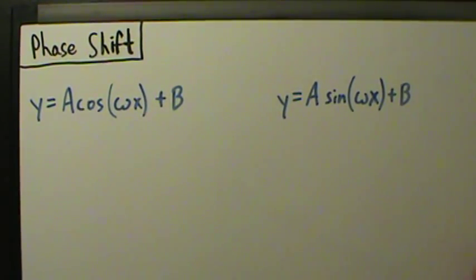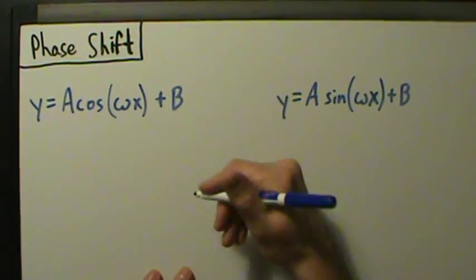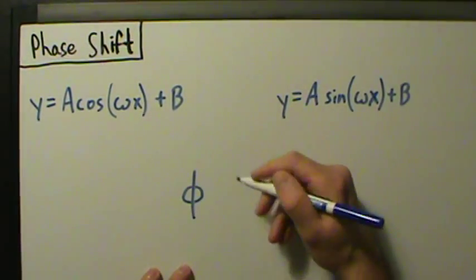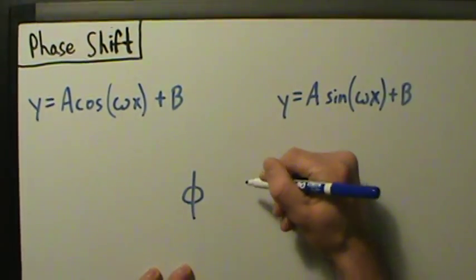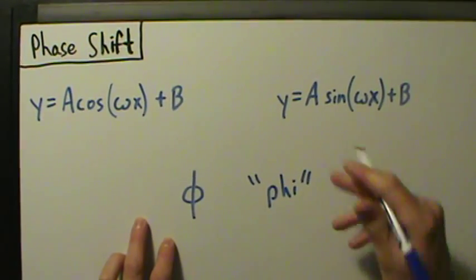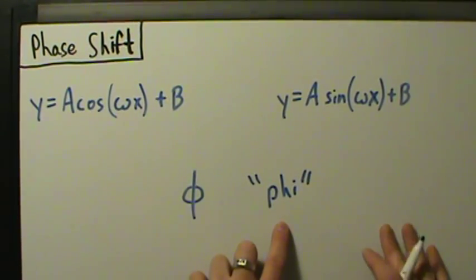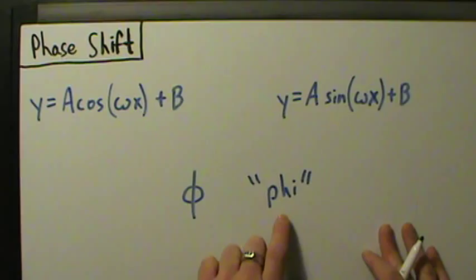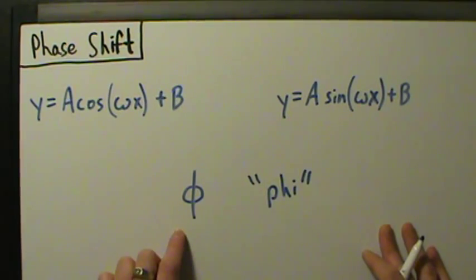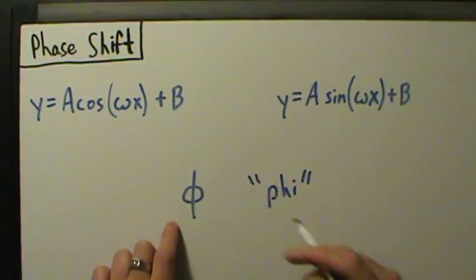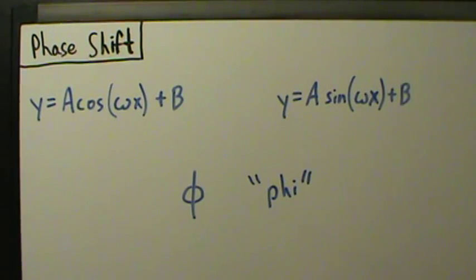Now we're going to toss in a phase shift, and to talk about that we're going to introduce the Greek letter lowercase phi. This is spelled P-H-I, and it's technically pronounced 'fee', though some people say 'fye'. The Greek letter phi looks like a little circle with a line through it.